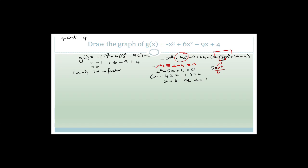So our x-intercepts are x = 1 or x = 4. Check: 4 × 1 = +4 and -4 - 1 = -5. Perfect. Now we need to differentiate. So g'(x) using the power rule becomes -3x² + 12x - 9. To find the turning points, we let g'(x) = 0.